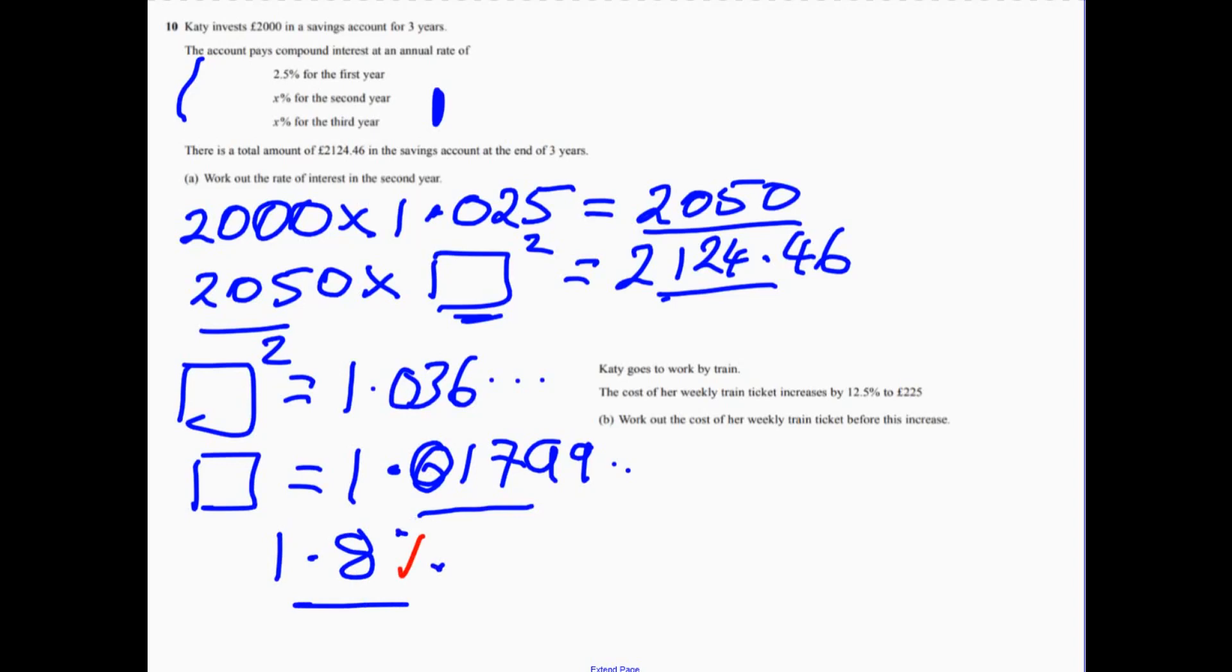On part B. Let's have a look at this part down here. Now, this is actually a reverse percentage question. What's happened is that there was some cost of the train ticket,